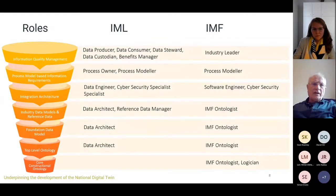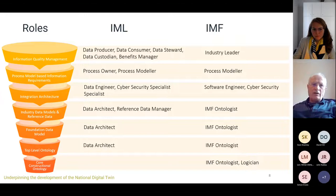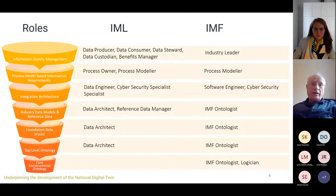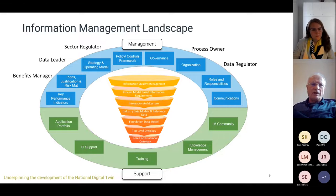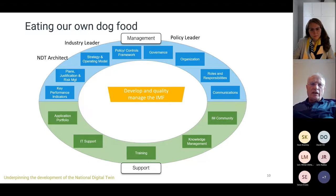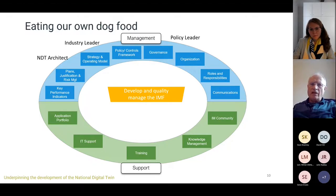Looking at the roles, you see different roles at these different levels — one of the ways you distinguish between the circles is that you have different skills and different roles at play, both at the information management landscape level and at the industry management framework level. At the outer levels you have people involved at sector and company level for the management part. The information management framework is itself information that needs to be managed, and indeed needs management and support for the way it's developed.